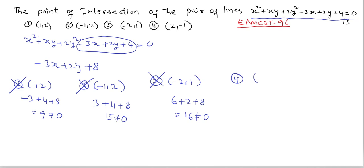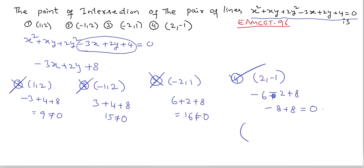Fourth option (2, -1): -3×2 + 2×(-1) + 8 = -6 - 2 + 8 = -8 + 8 = 0. Fourth option is correct. The point of intersection of this second pair of lines is (2, -1).